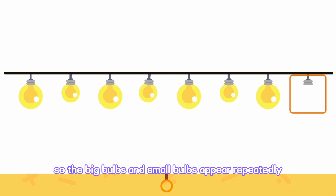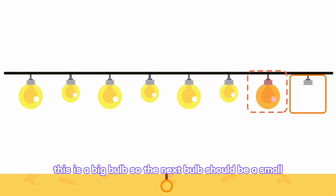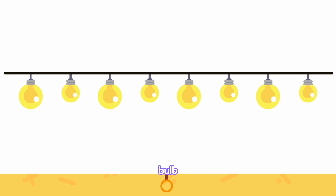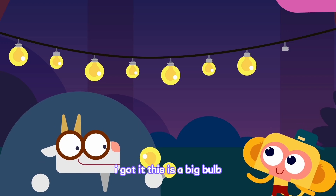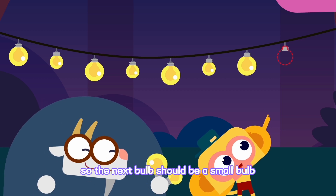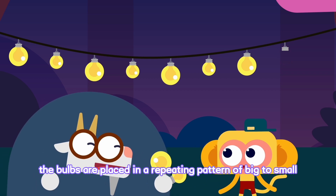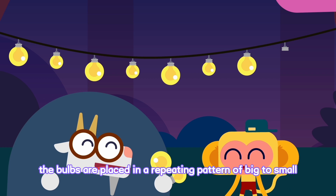The big bulbs and small bulbs appear repeatedly. This is a big bulb, so the next bulb should be a small bulb. Give it a try. The bulbs are placed in a repeating pattern of big to small.